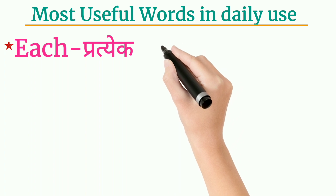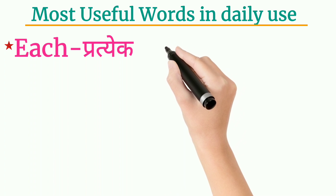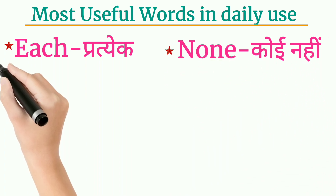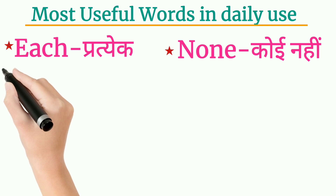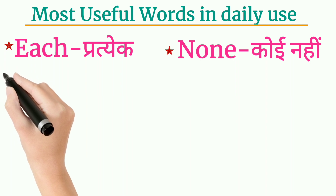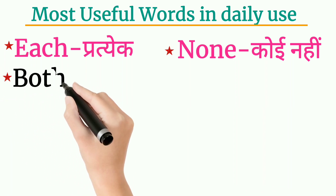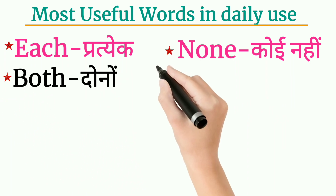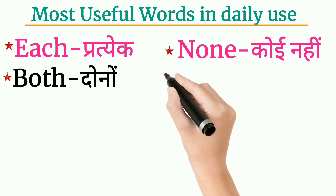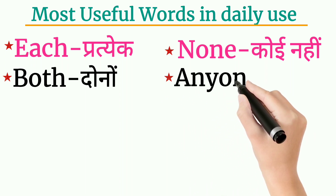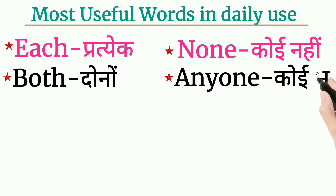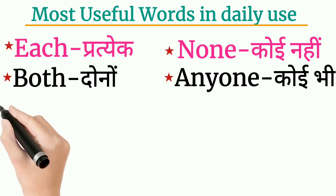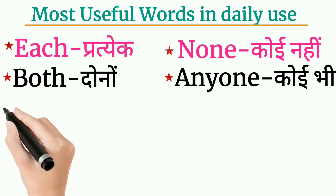First word is 'each' means pratek. 'None' means no one. 'Both' means two. 'Anyone' means no one.